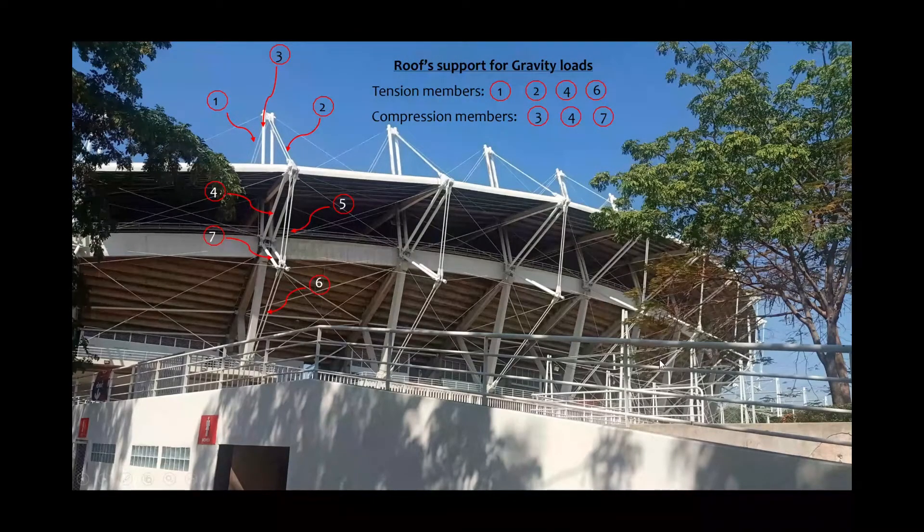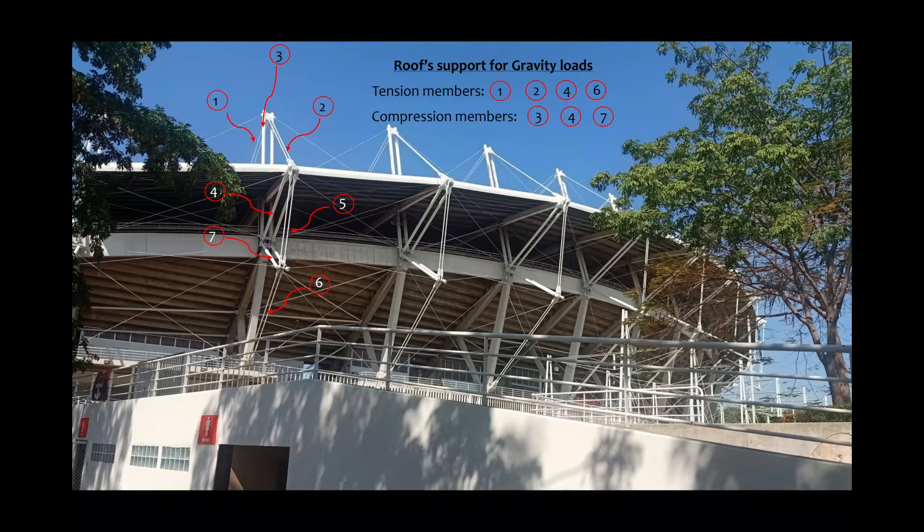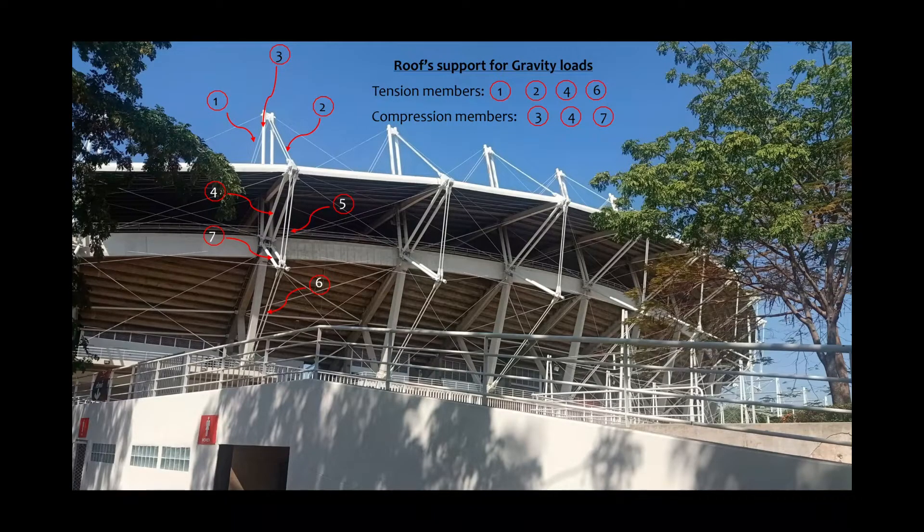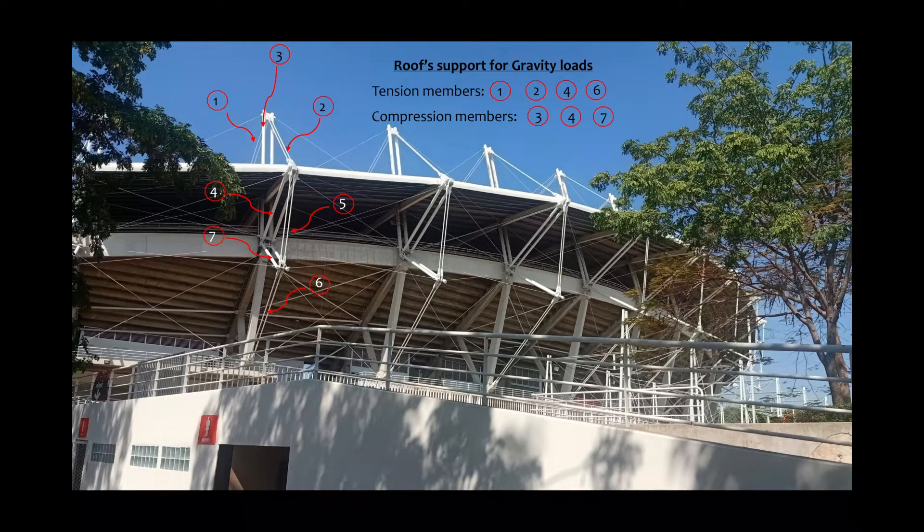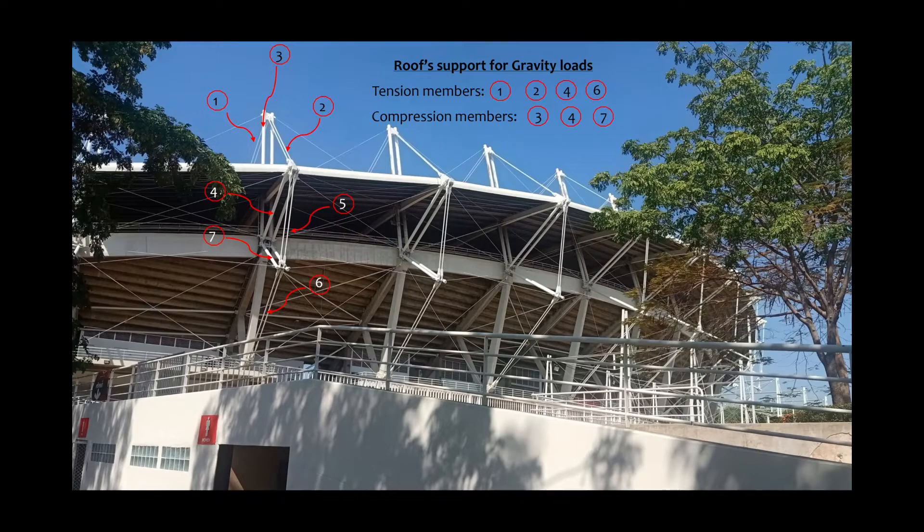The members responsible for channeling the flow of gravity-related forces have been labeled in this picture. These components are assigned the same labels as in the diagram shown earlier for the comparison purposes. Please ignore all other members in the structural steel visible in this picture. They are not part of the structural scheme responsible for gravity loads. I will come to them shortly.